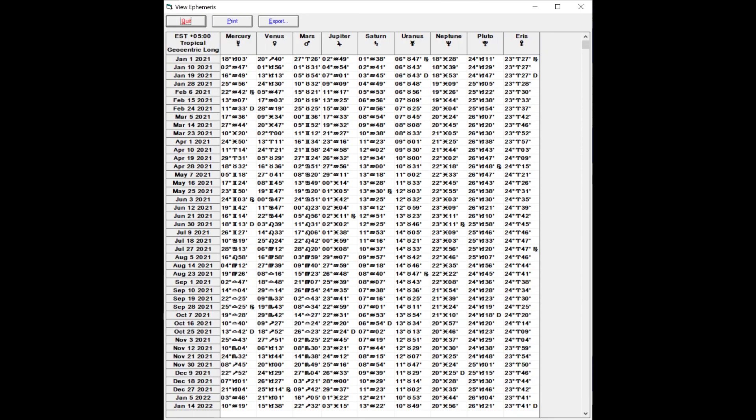Planetary stations happen when the planet is either about to stop its forward movement and begin to go backwards for some period of time, or the other way around, it has been going backward for quite a while, and then it comes to a stop so that it can begin to move forward.